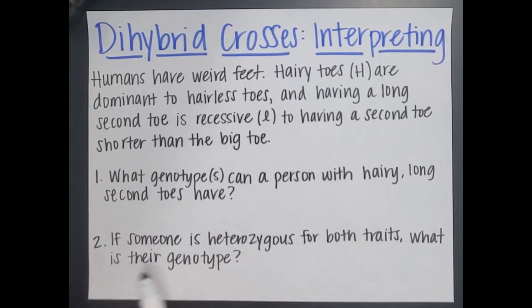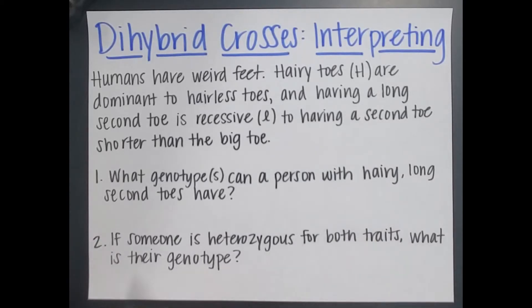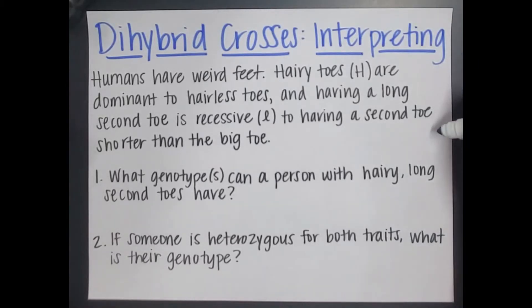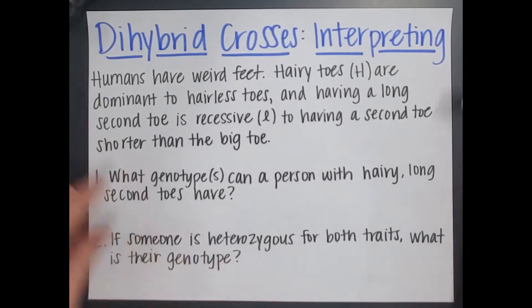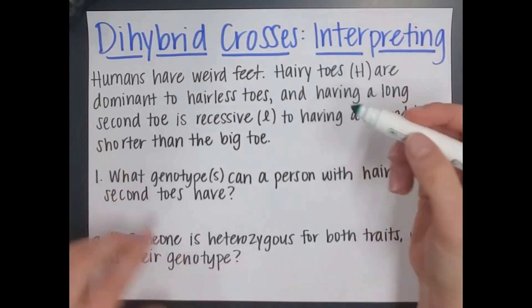The second question is: if someone is heterozygous for both traits, what is their genotype? We don't need to do a Punnett square to figure out any of these answers. This is all about whether we can interpret the problem we were given. So let's take a look.